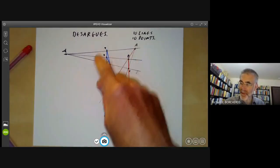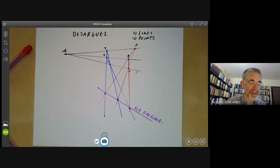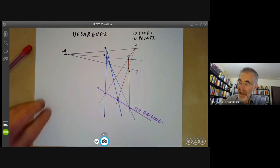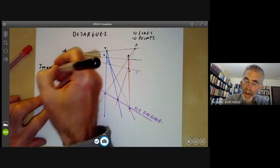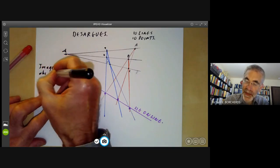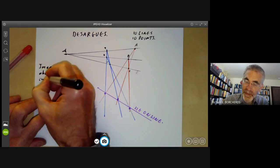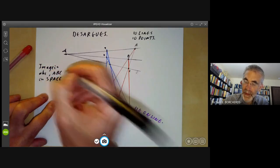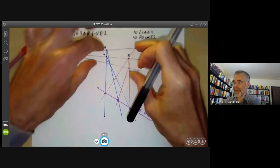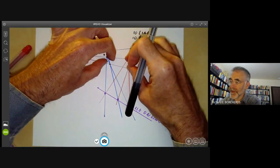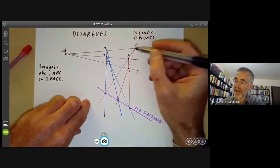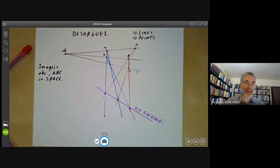Well, it's a theorem about points and lines in the plane. But in some sense, it's very difficult to prove if you stay inside the plane. So the key point of the proof is to imagine the triangles ABC and A'B'C' in space. So we should think of this as being triangles in a three dimensional space. And in particular, the planes containing these two triangles should be different.